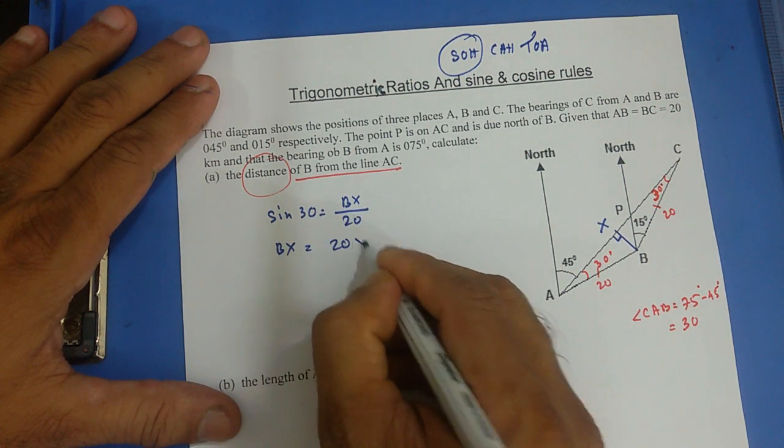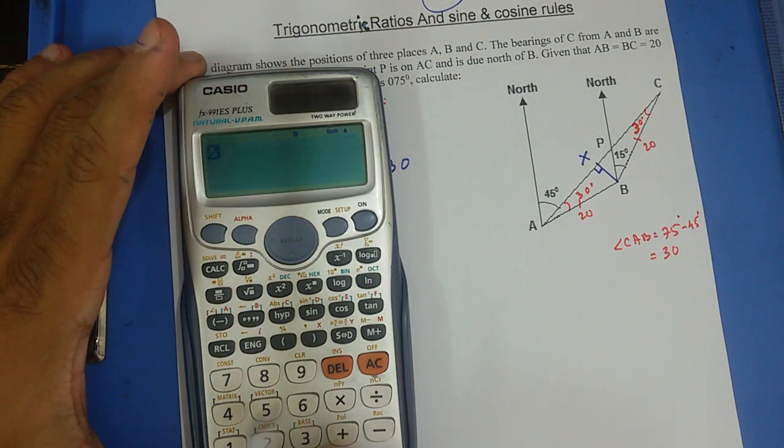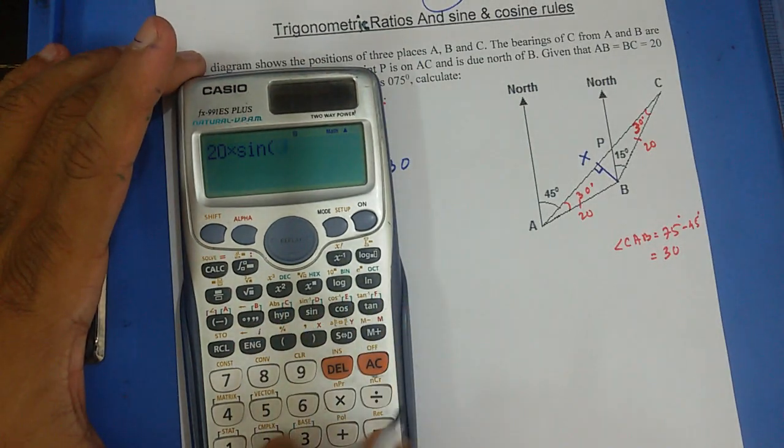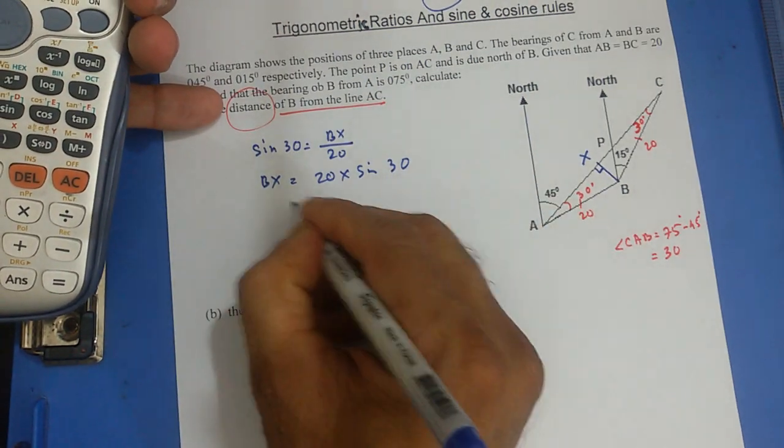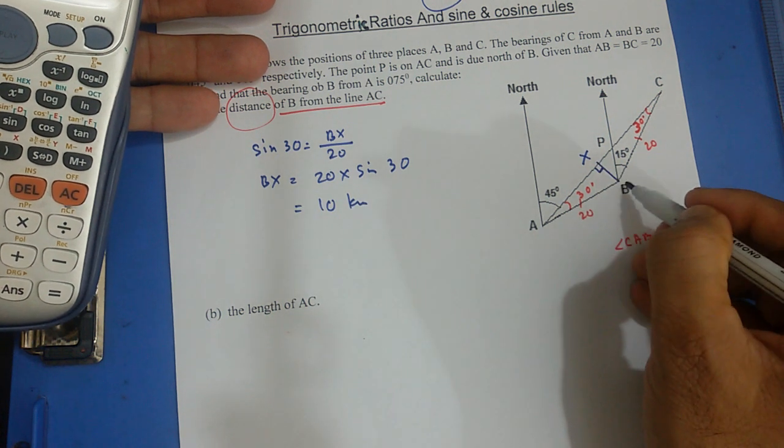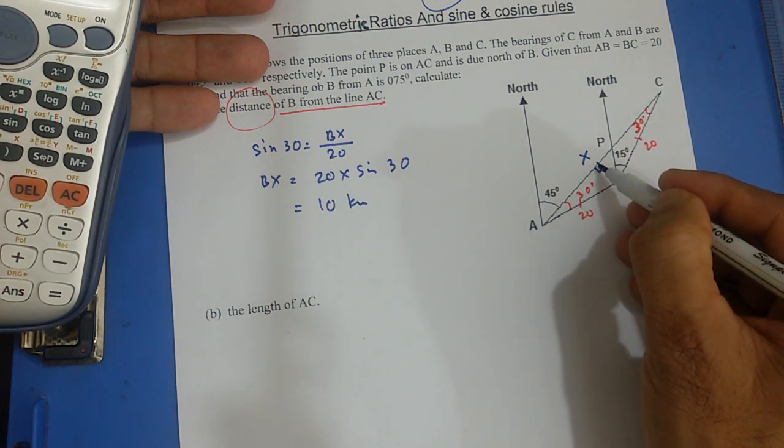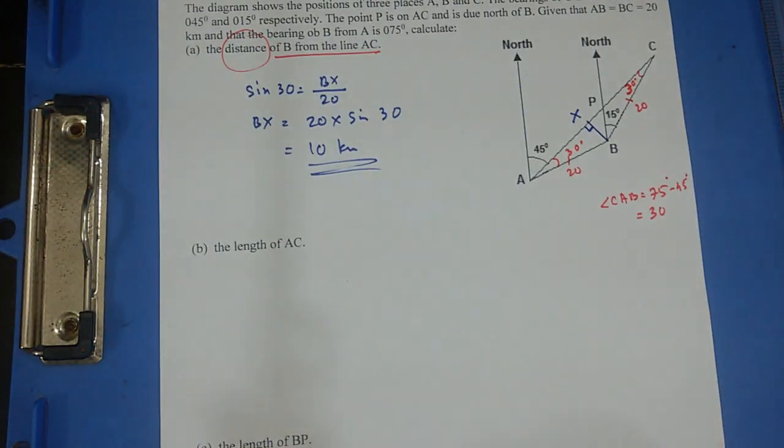BX equals 20 times sine 30. And sine 30 equals half, but you can use the calculator. Sine 30 is going to be a half times 20, that's 10. 10 kilometers. So the distance of B from AC, the shortest distance, that's going to be 10 kilometers.